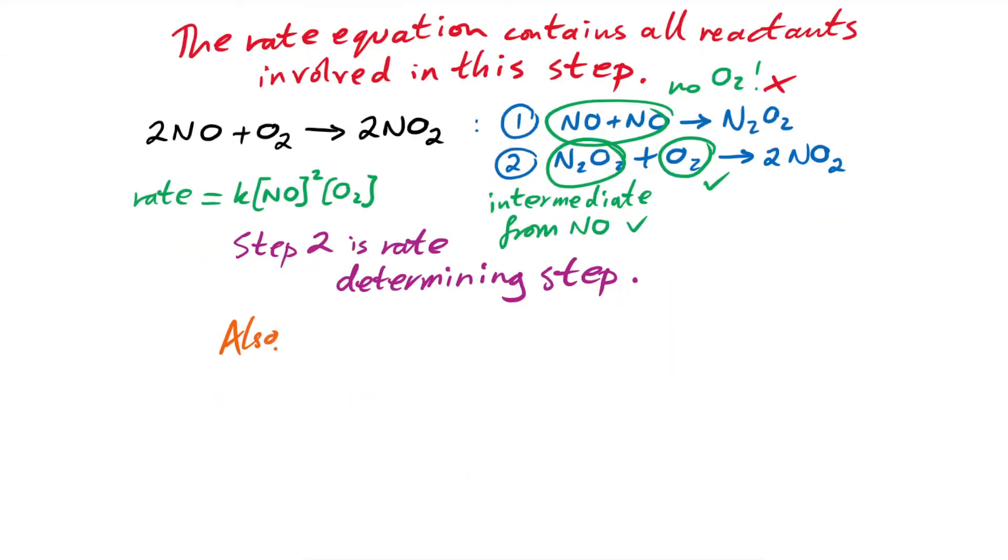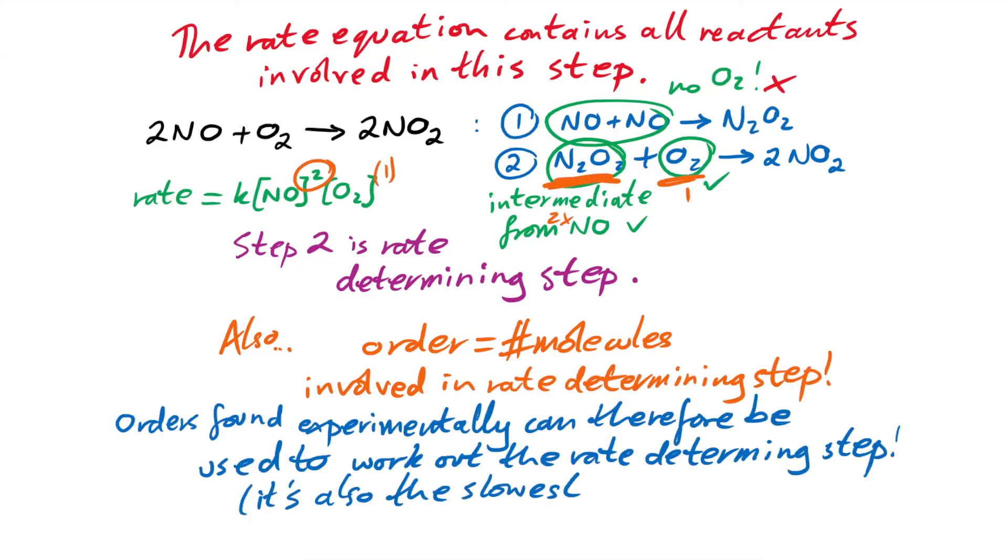Now we can actually use this to find out how many molecules are involved in the rate determining step. We can do it backwards as it were. If you find out experimentally that a reactant is second order, let's say, that means that there must be two molecules of that reactant involved in the rate determining step. Rate determining step is the slower step in a mechanism. So I hope you found that helpful. If you did, please leave a like. And if you have any suggestions on what I could do next, then pop it in the comment down below or head to the Discord. See you next time.